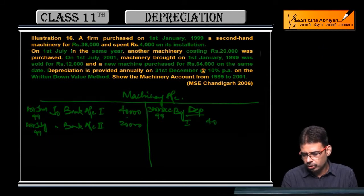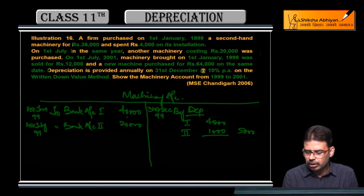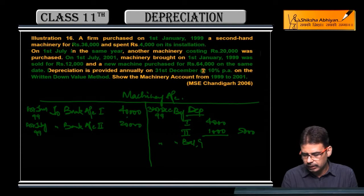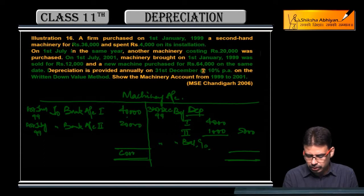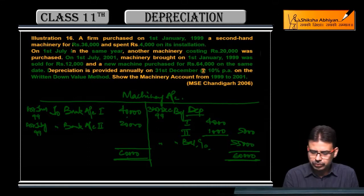Full year depreciation 4,000, half year 1,000, total 5,000. Balance carried down: total is 60,000, depreciation 5,000 already applied, balance remaining 55,000.